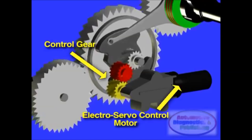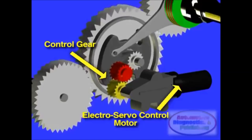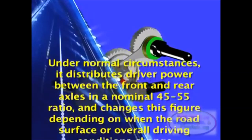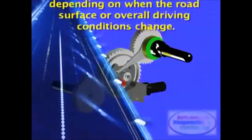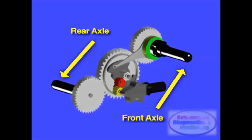X-Drive is the all-time, all-wheel drive or four-by-four system from BMW. Under normal circumstances, it distributes driver power between the front and rear axles in a nominal 45-55 ratio, and changes this figure depending on when the road surface or overall driving conditions change.